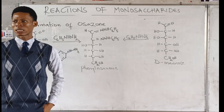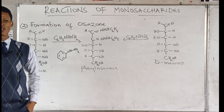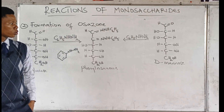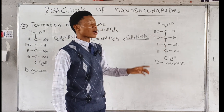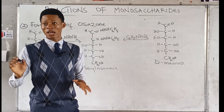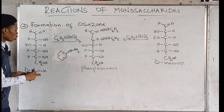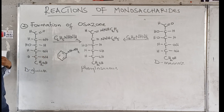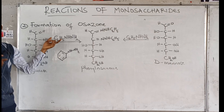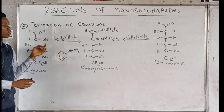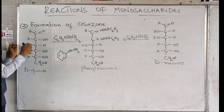Glucose and galactose are also epimers — they differ in position four, as you can see if you draw the structure of galactose. Now, if glucose reacts with excess phenylhydrazine, the phenylhydrazine will attach to carbon-1 and carbon-2. One hydrogen is removed in the process of attaching.